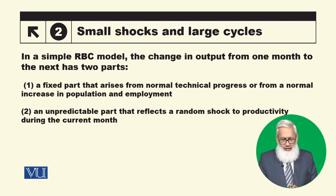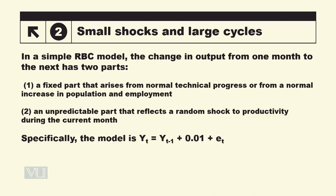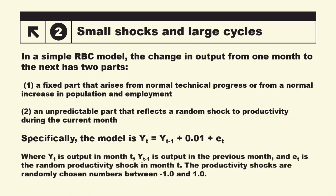The second is an unpredictable part that reflects a random shock to productivity during the current month. The first part is the fixed part — normal technical progress or normal population increase. E_T represents the unpredictable part.